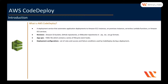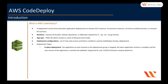CodeDeploy comes with two different deployment types. The first one is in-place deployment. This is only applicable for EC2 and on-premise compute platforms, not for AWS Lambda and ECS. With in-place deployment, the application on each instance in the deployment group is stopped based on the deployment configuration you choose.